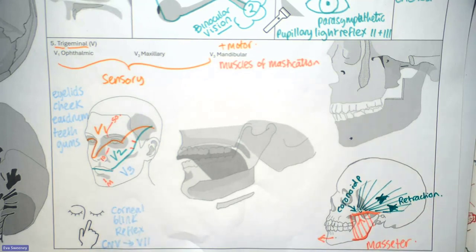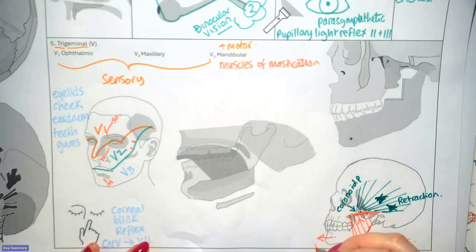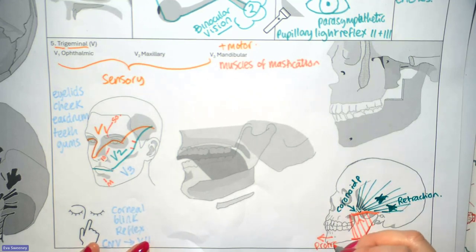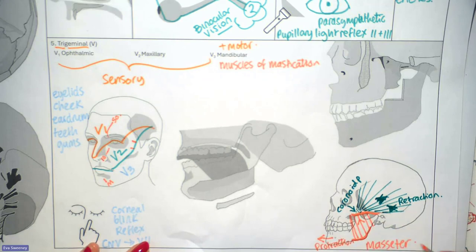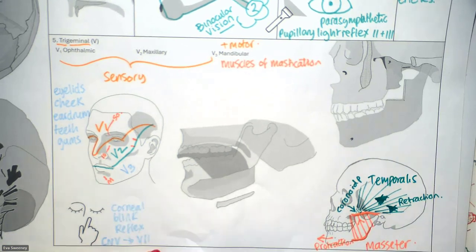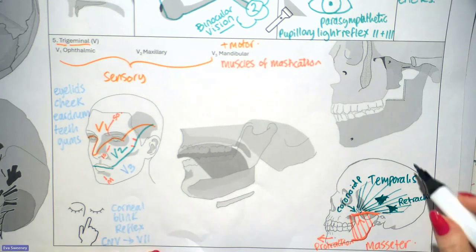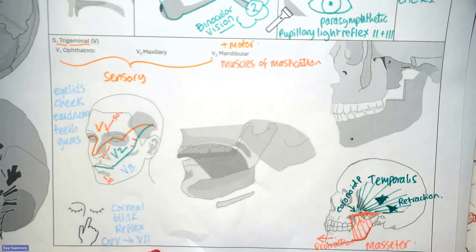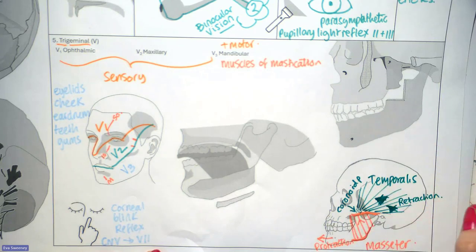So the temporalis elevates and retracts the mandible. Whereas the masseter assists with protraction, also known as protrusion. Together they work to close the jaw and elevate the mandible.